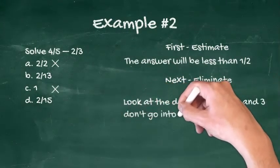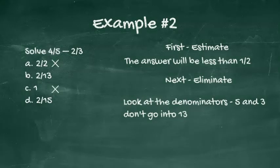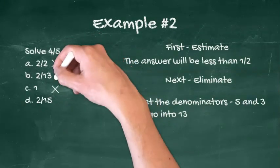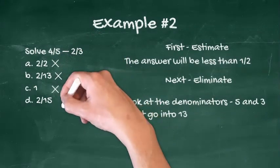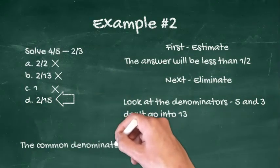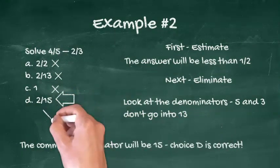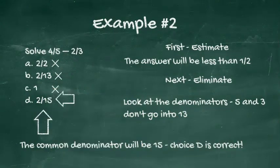Next, look at the denominators. Since five and three don't go into thirteen, choice B can be eliminated as well. That leaves choice D. Checking the answer, the common denominator will be fifteen, so the answer is two-fifteenths, and choice D is correct.